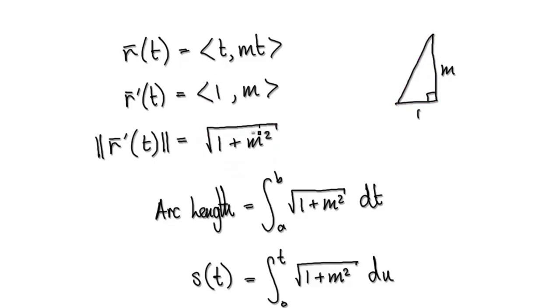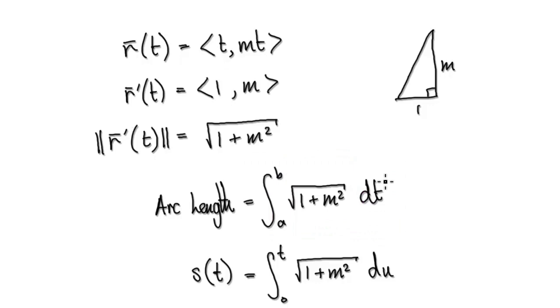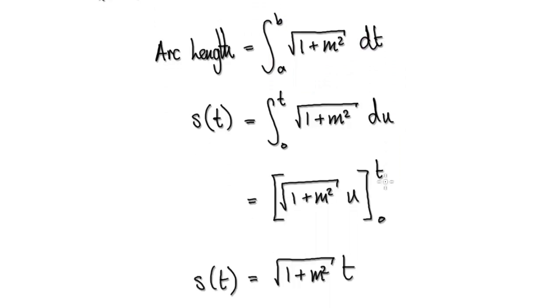So now that we know this, the arc length is given by this, integrated from a to b, and then integrated with respect to time. So now, we want to find this. So integrated from, rather than from a to b, integrated from 0 to t.